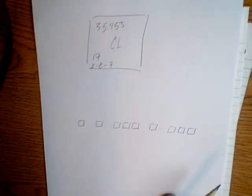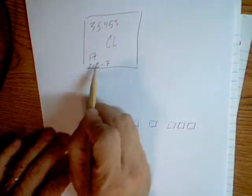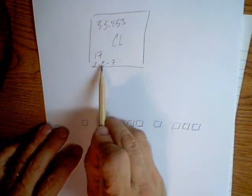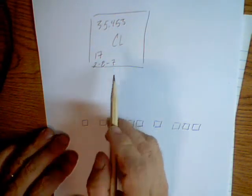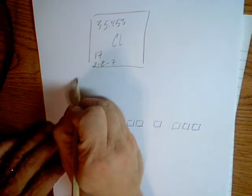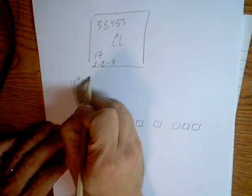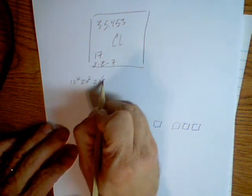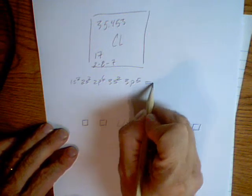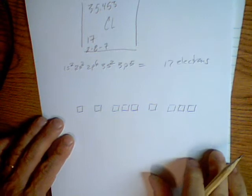So, let's try one more. Chlorine. If I asked you to do the Bohr model, you'd put two electrons in the first, eight in the second, and then seven in the third. So, the expanded electron configuration would be 1s2, 2s2, 2p6, 3s2, 3p5, for a total of 17 electrons.